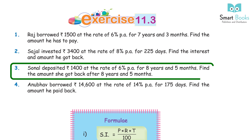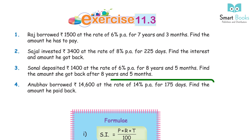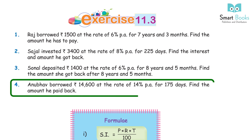Question 3: Sonal deposited Rs 1,400 at the rate of 6% PA for 8 years and 5 months. Find the amount she got back. Answer: Rs 2,107. Q4: Anubhav borrowed Rs 14,600 at the rate of 14% PA for 175 days. Find the amount he paid back. Answer: Rs 15,580.